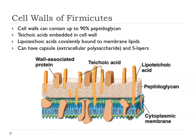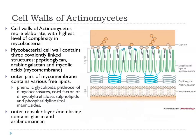There's a very thick layer of peptidoglycan, and embedded in this are teichoic acids. In actinomycetes, there's a much more complex picture with the mycolic acid layer, arabinogalactans, and this outer layer — sometimes called an outer membrane, sometimes called a capsule — which contains glucans and arabinogalactans.